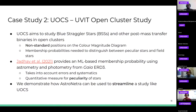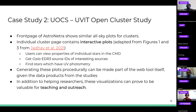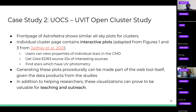What we will now demonstrate is how our interface can be used to streamline a study like this. The front page of AstroNitra would show similar all-sky plots for open clusters, and the individual pages would show properties for open clusters rather than X-ray binaries. We can add interactive plots — we have shown two example figures adapted from the paper. Users can view properties of individual stars, find the Gaia source IDs of peculiar stars studied in that paper, and find stars which have UV photometry. Generating these plots is a trivial part of the web tool itself, and these visualizations are very useful for teaching and outreach purposes as well.